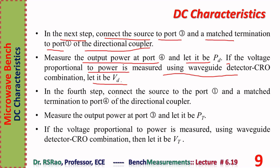In step four, connect the source to port one and a matched termination to port four of the directional coupler. Measure the output power at port three and let it be PT (or voltage VT). Note that VT is proportional to PT and VD is proportional to PD, because the detector is a square-law device.